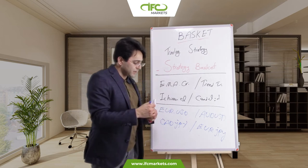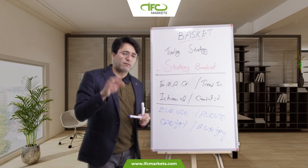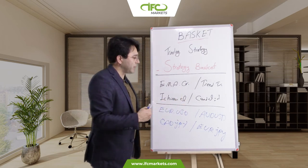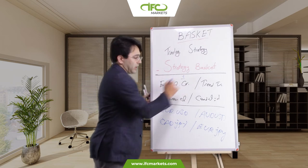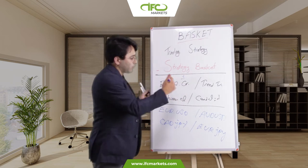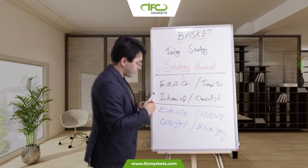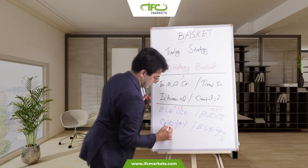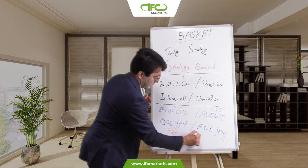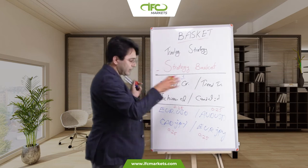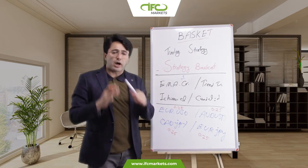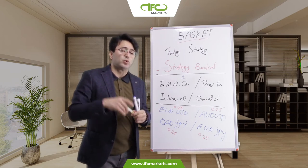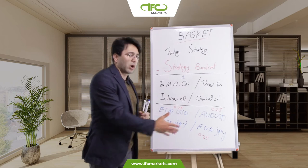The next step is to divide the total value you want to trade across these symbols. For example, if you want to trade one lot, you can divide it into 0.25 for each symbol — 0.25, 0.25, 0.25, and 0.25. In this case, you have divided your risk and your possible losses into four different markets.